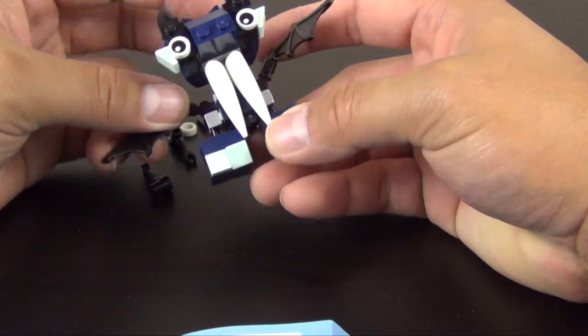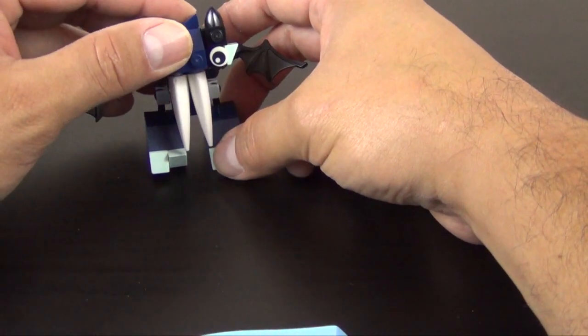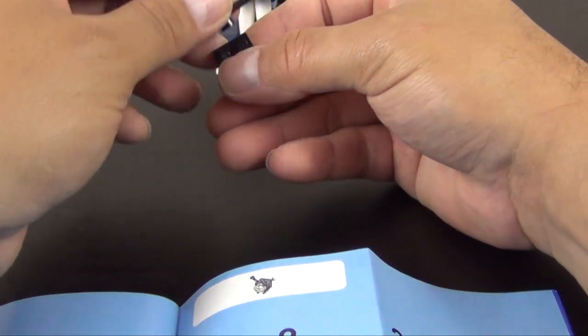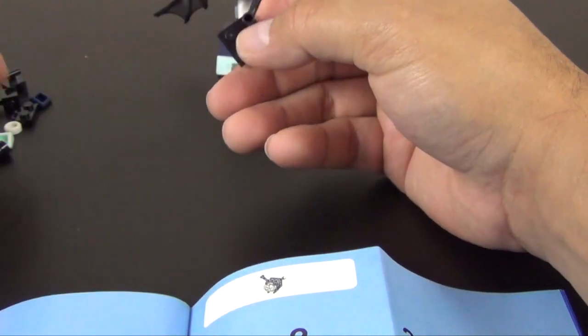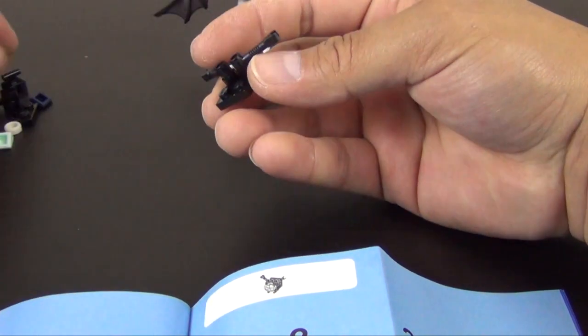Alright, so there is Vampos. We have a few more pieces left. This is why this set comes with a little bit more elements, because we're actually going to build a Nixle. It's not a Mixle, but a Nixle. It's the enemy guys, or the villains.